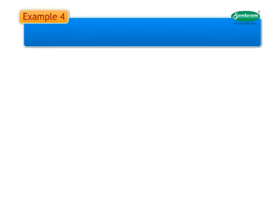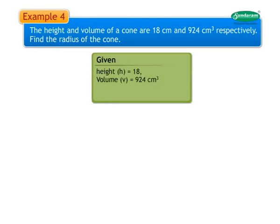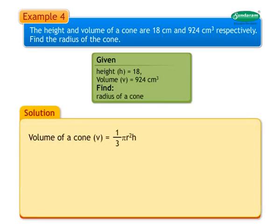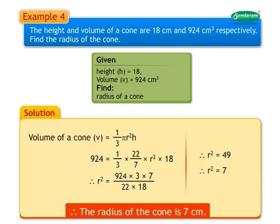Example 4: The height and volume of a cone are 18 cm and 924 cm³ respectively. Find the radius. Solution: Volume = 1/3 × π × r² × h, so 924 = 1/3 × 22/7 × r² × 18. Therefore r² = 924 × 3 × 7 / (22 × 18) = 49, so r = 7. The radius of the cone is 7 centimeters.